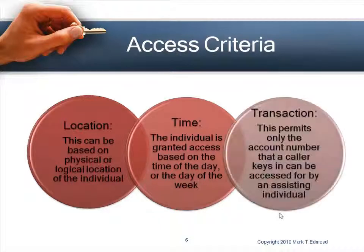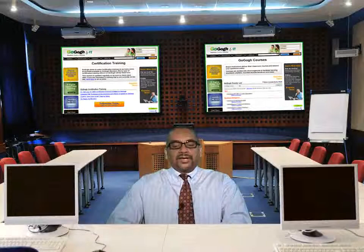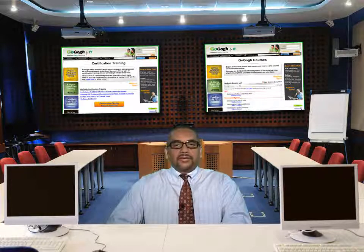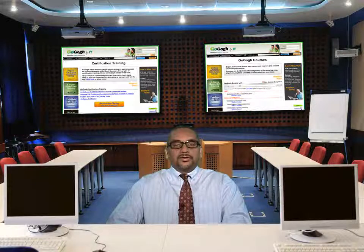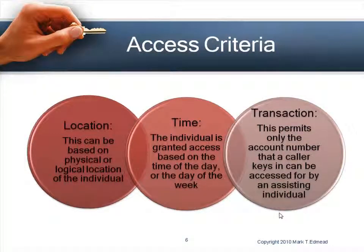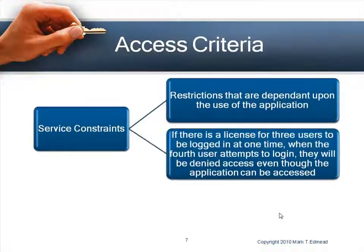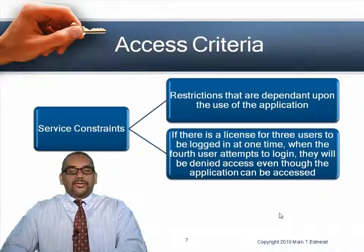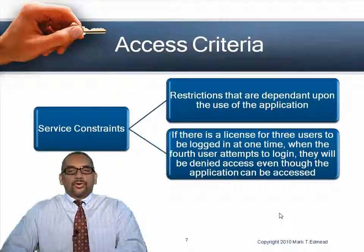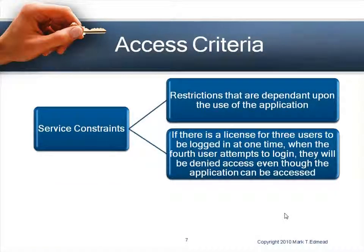Location, time, and transaction are three ways you can limit access. An individual may only have access to a certain location — if they work in the San Diego office and go to the New York office, they may not have access to certain things. In the service constraints area, an application might require only three authorized users logged on at the same time, which is another criteria.